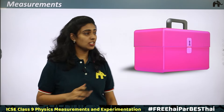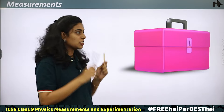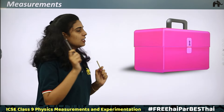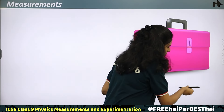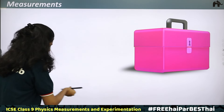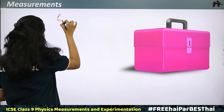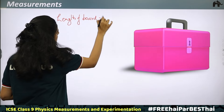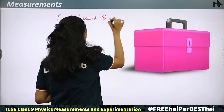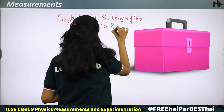Let's understand what is measurement and how to measure. Here we are going to measure the length and breadth of this board. I am using a pen and a pencil to measure. First, let us measure the length. Starting from one end: 1, 2, 3, 4, 5, 6, 7, 8. So the length of the board is equal to 8 times the length of a pen, or 8 pens.